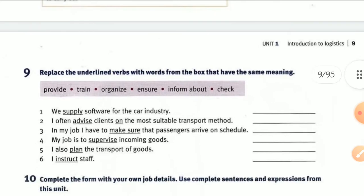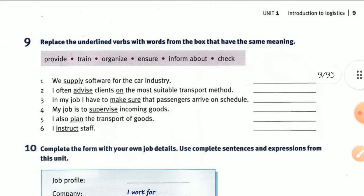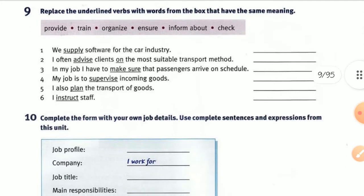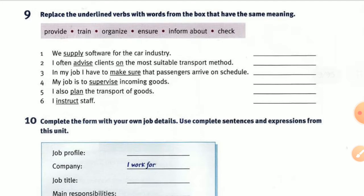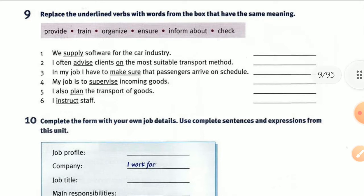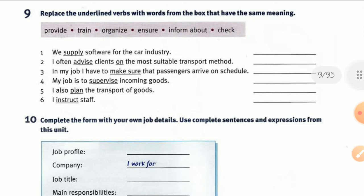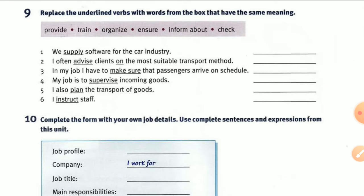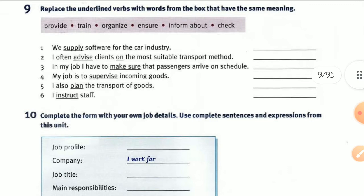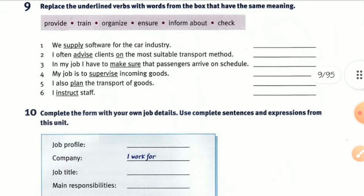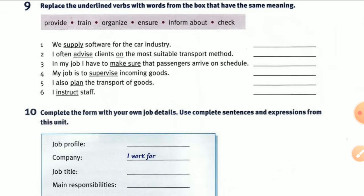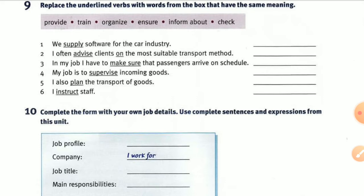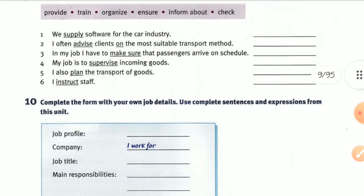We're still in Unit One, Introduction to Logistics, and now we reach exercise nine. You have to replace the underlined word with a word from the box that has the same meaning. For example, number one: 'We supply software for the car industry' — what word has the same meaning as 'supply'?